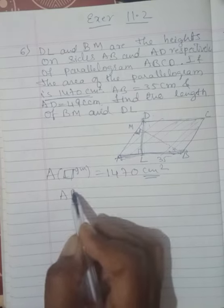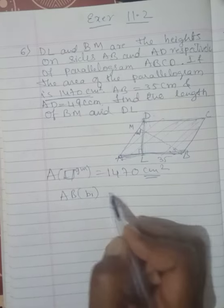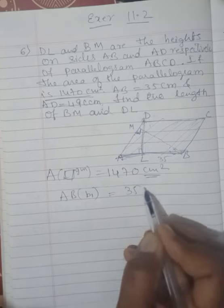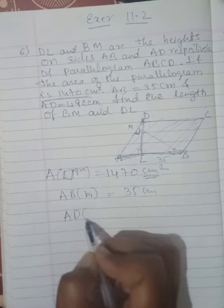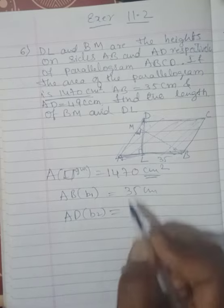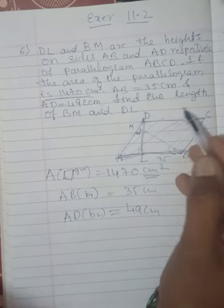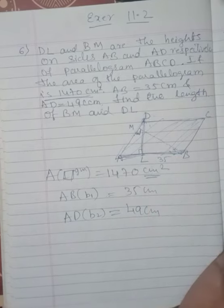So AB is equal to, this is base one I can say, how much is it given? 35 centimeters. And also once again you are given the base AD only. AD, this is base 2. With respect to this one, it is given how much? 49 centimeters. Find the length of BM and DL.